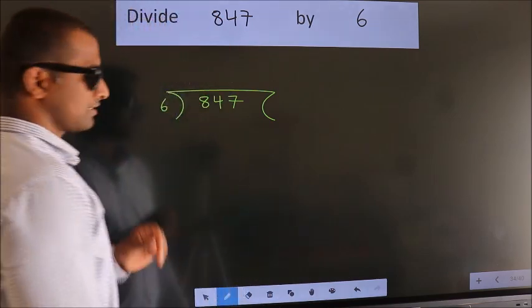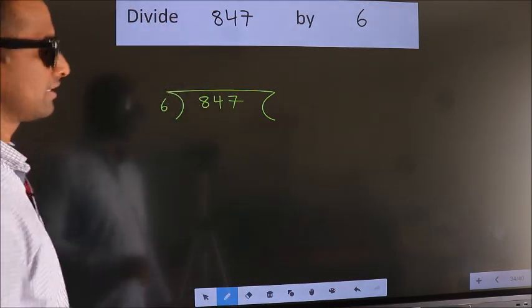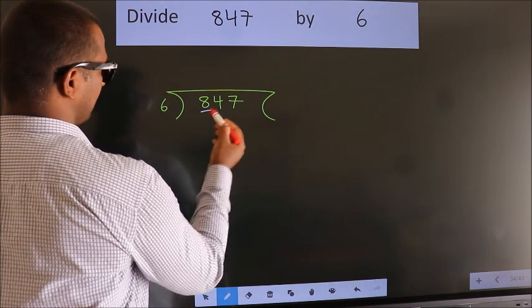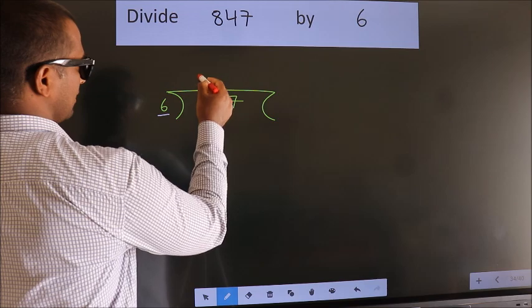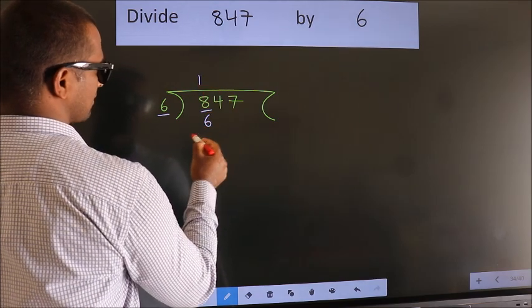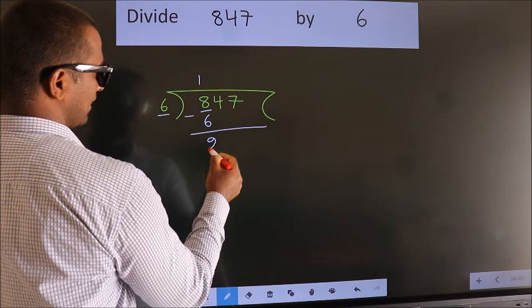This is your step 1. Next, here we have 8, here 6. A number close to 8 in 6 table is 6 once 6. Now, we should subtract. We get 2.